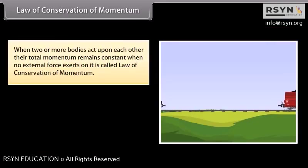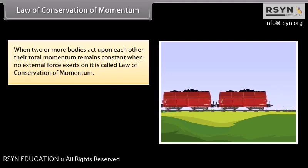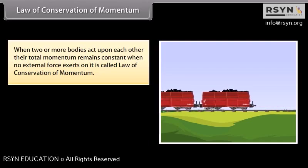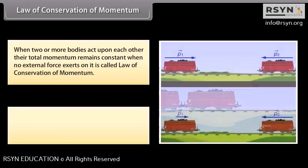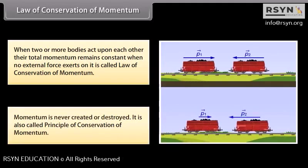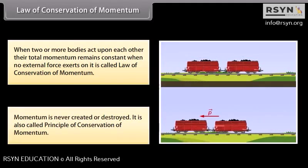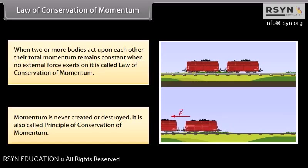Law of conservation of momentum. When two or more bodies act upon each other, their total momentum remains constant when no external force exerts on it. This is called law of conservation of momentum. Momentum is never created or destroyed. It is also called principle of conservation of momentum.